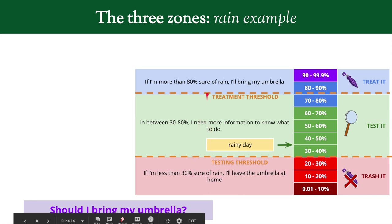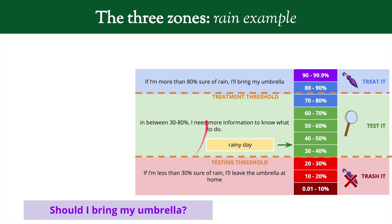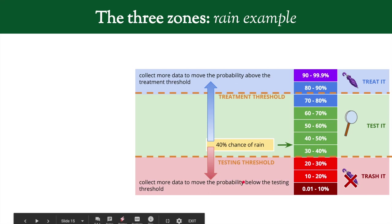In the trash it zone we leave the umbrella at home because we feel pretty sure it won't rain. Here's how the thresholds are set: if I'm more than 80% sure it's going to rain, I just bring the umbrella. If I'm less than 30% sure of rain, I leave it at home. In the middle zone — 30% to 80% — we don't know; we need more information, and our goal is to push that probability either above 80% or below 30%.